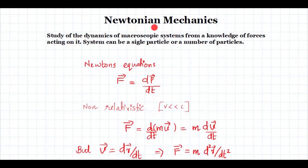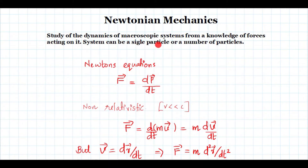Before going into analytical mechanics, I will give you a brief overview of Newtonian mechanics. It is all about a study of the dynamics of a macroscopic system from a knowledge of forces acting on it. The system can be a single particle system or a system of particles. Here we will use Newton's equation: F is equal to dp by dt, where p is the momentum of the system.